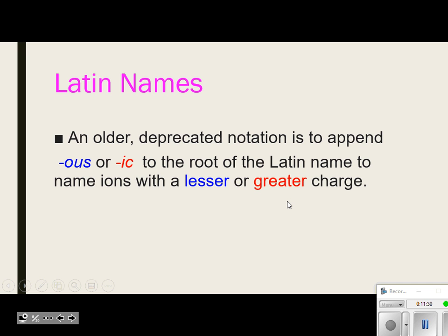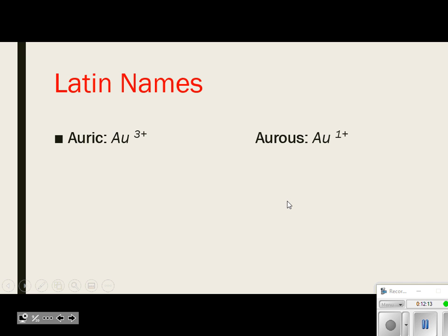Tin two is stanous, tin four is stannic. Iron two is ferrous, iron three is ferric — the higher one has the IC, the lower one has the OUS. Typically we use the stock system of nomenclature with Roman numerals, as that is the current IUPAC convention rather than the outdated Latin names. Here's gold — auric and aurous, gold three and gold one. That's where the symbol AU for gold comes from.